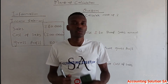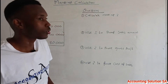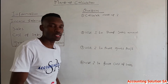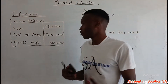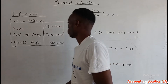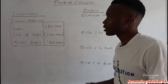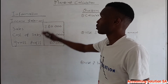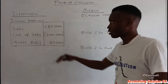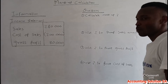In this video I'm going to show you how to calculate a markup, how to use your markup when calculating sales, cost of sales, and gross profit. I'm going to use a very simple step so this video is not going to take long. As you can see, we've been given information on the income statement — this is the only information we use when calculating a markup. We have sales, cost of sales, and gross profit.